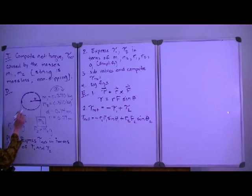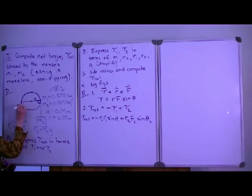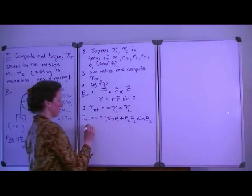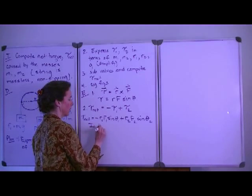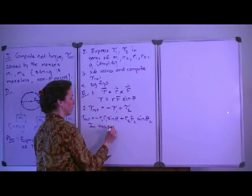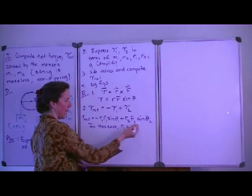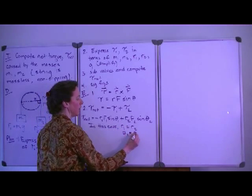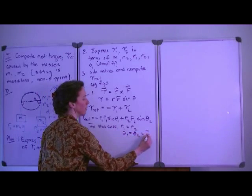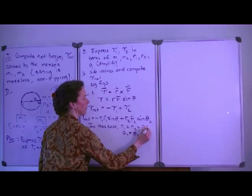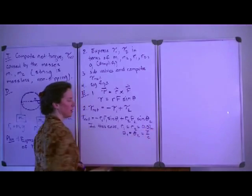Now, the angle between the radius of the pulley, which is our moment arm, and the force exerted is 90 degrees, or pi over 2. That is also the case for mass 1 here. So in both cases, R1 equals R2, and theta1 is equal to theta2, which is pi over 2. And that's the moment arm is 0.07 meters.